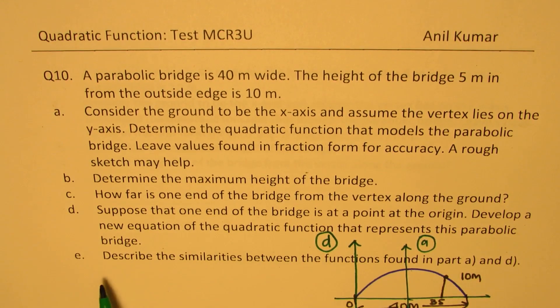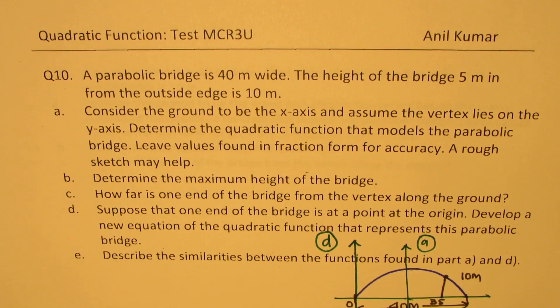This is your part D. So with that axis 0 and 40 will work. Okay. Describe the similarities between the functions found in part A and D. So there are two equations you are looking for. One, where the y-axis goes through the vertex. And the other one, where the y-axis matches the beginning of the bridge.